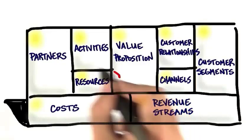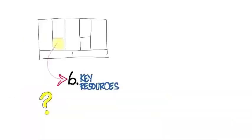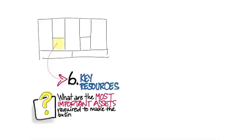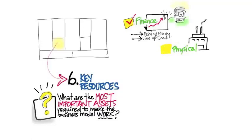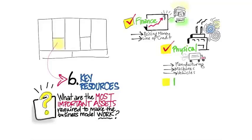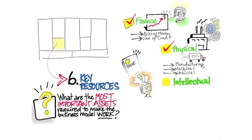The next piece is key resources — what do you need to make the business model work? What assets are important? Finance: do you need capital or a line of credit? Some assets are physical: do you need a manufacturing line, specialized machines, vans for delivery? Do you need intellectual property — patents to acquire or protect? Do you need to acquire customer lists?